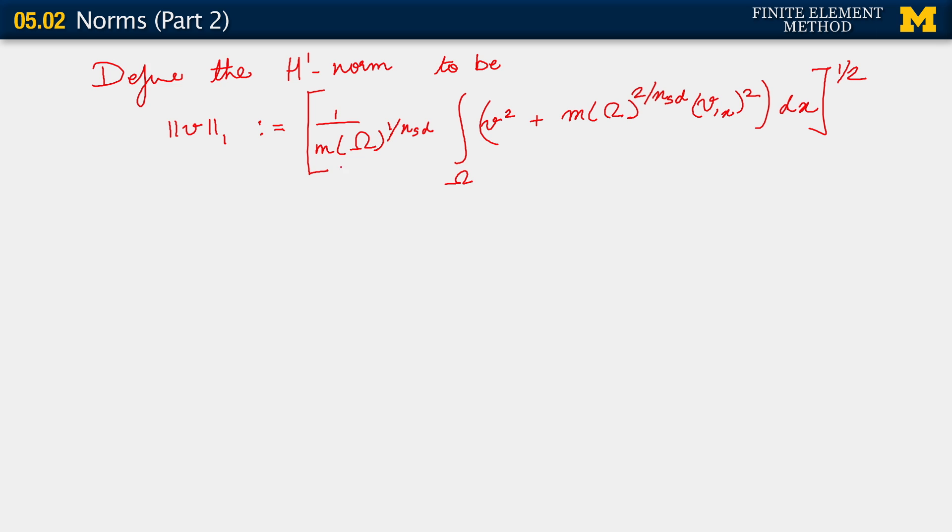Just a couple of things to notice here. We have divided through by measure of omega raised to 1 over number of spatial dimensions to get rid of the effect of having integrated the function and its derivative squared over the domain. Defined as this, we have what is called the H1 Hilbert norm.